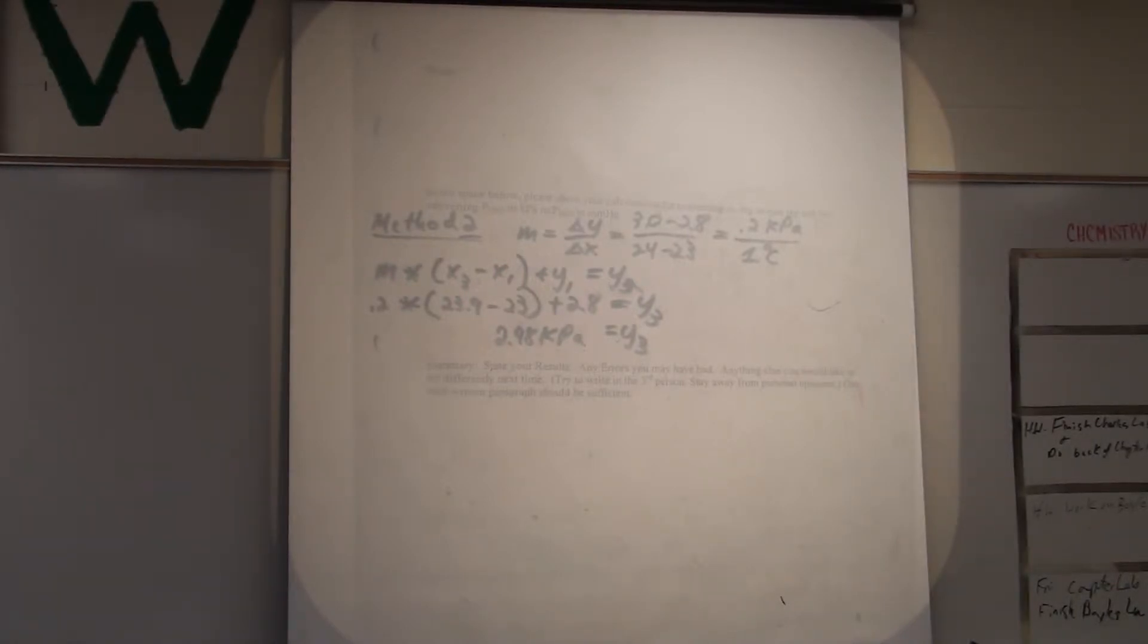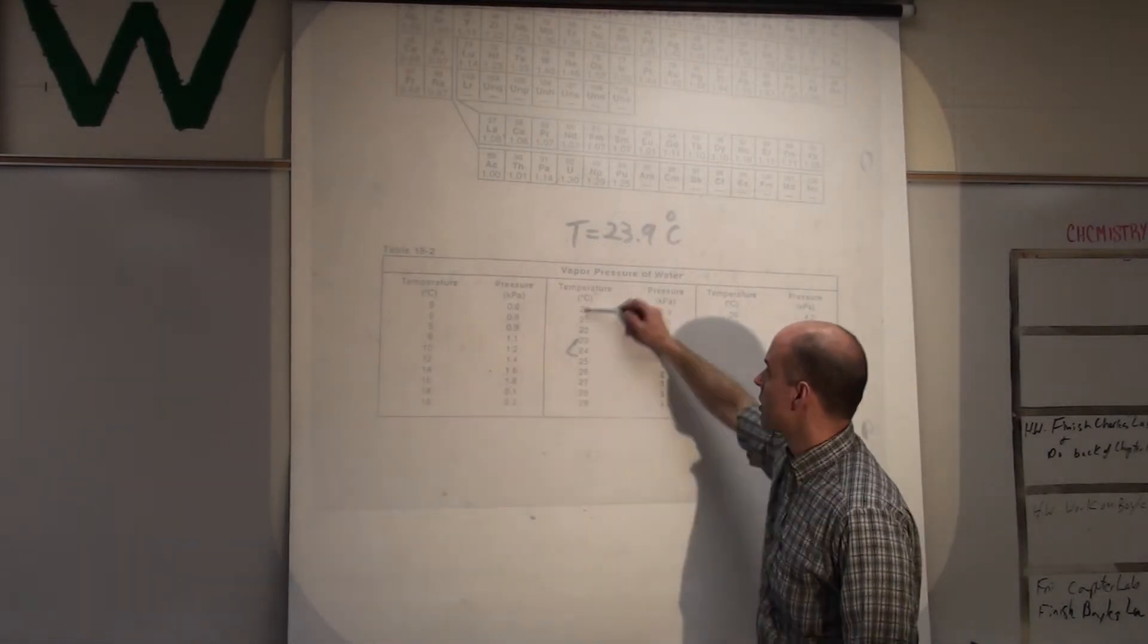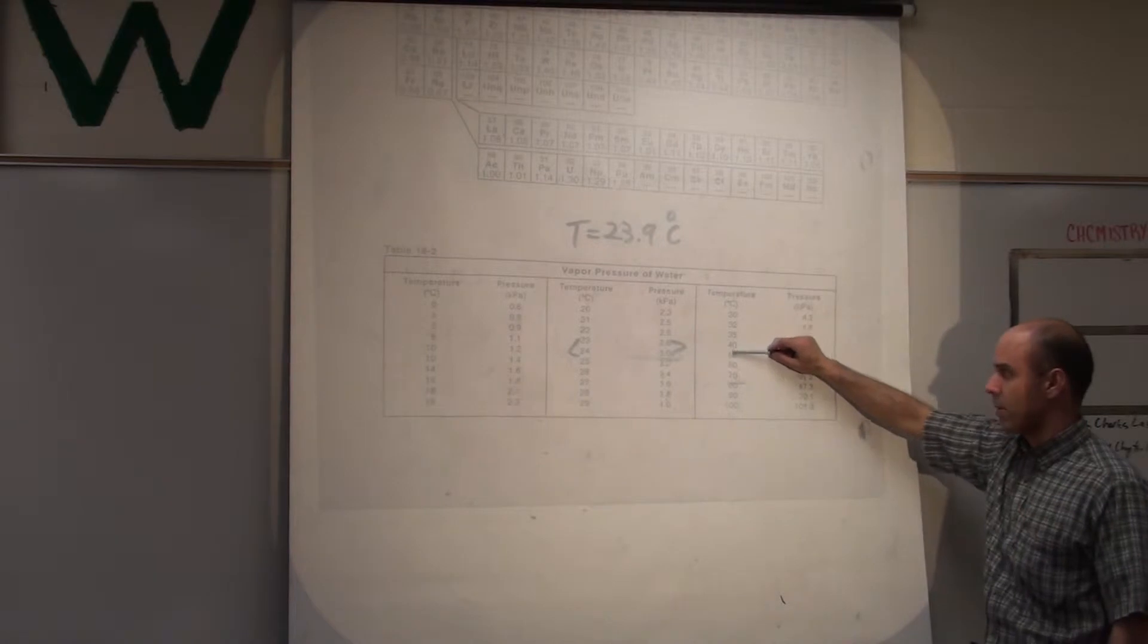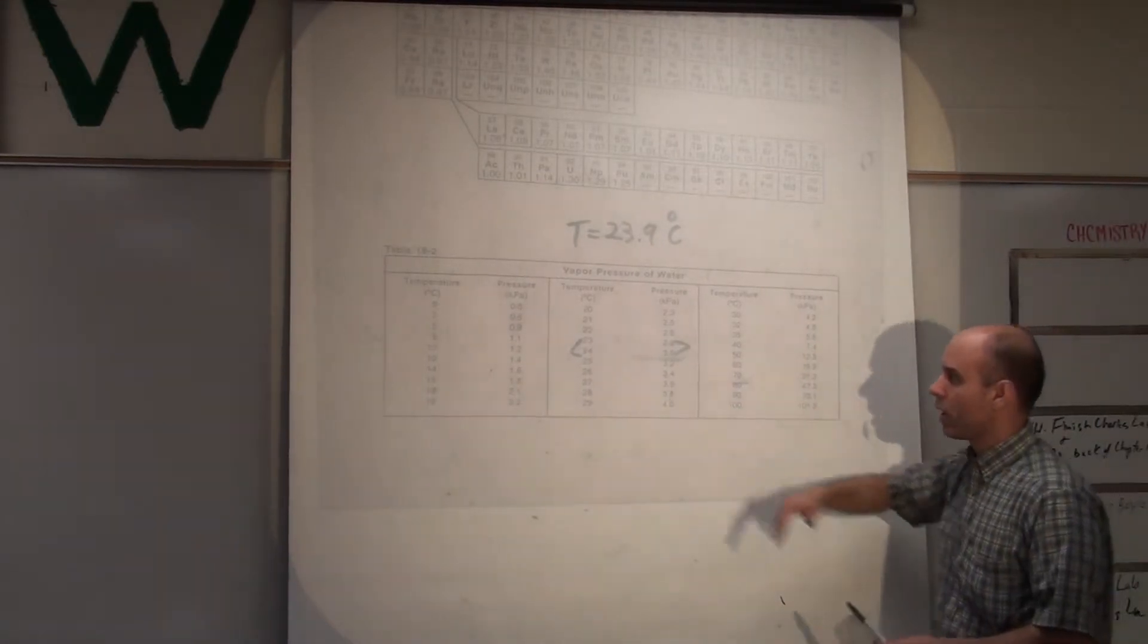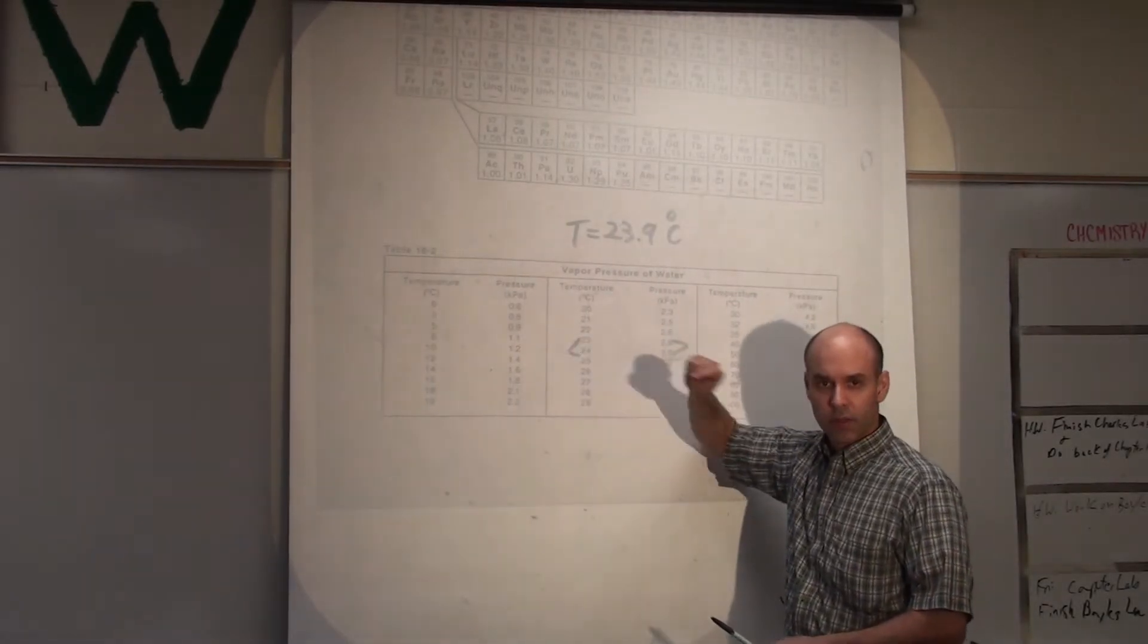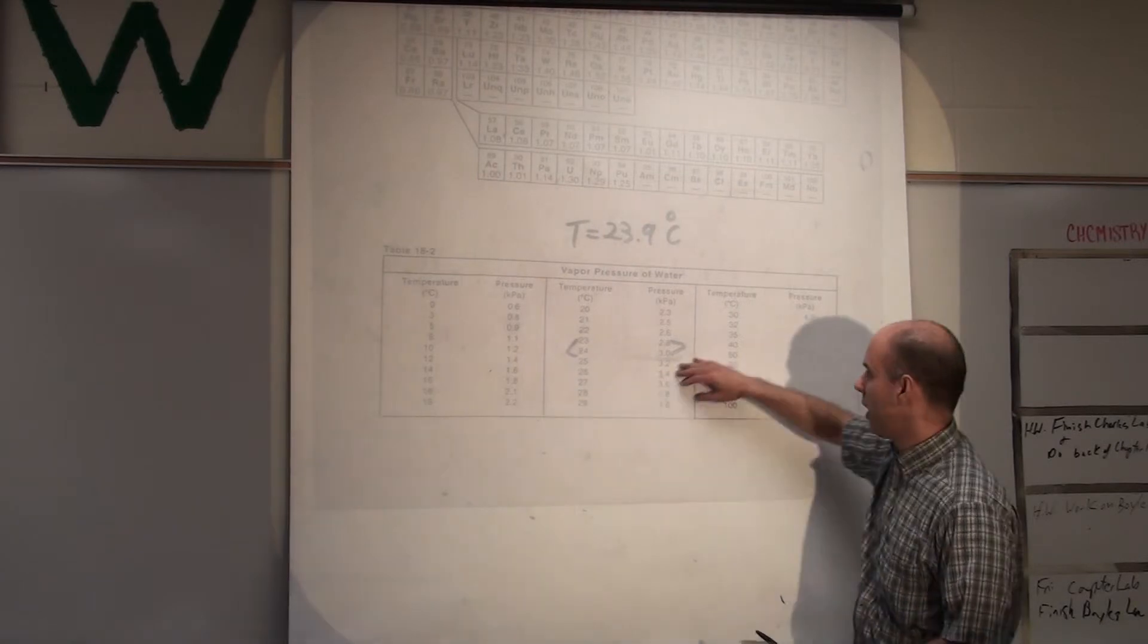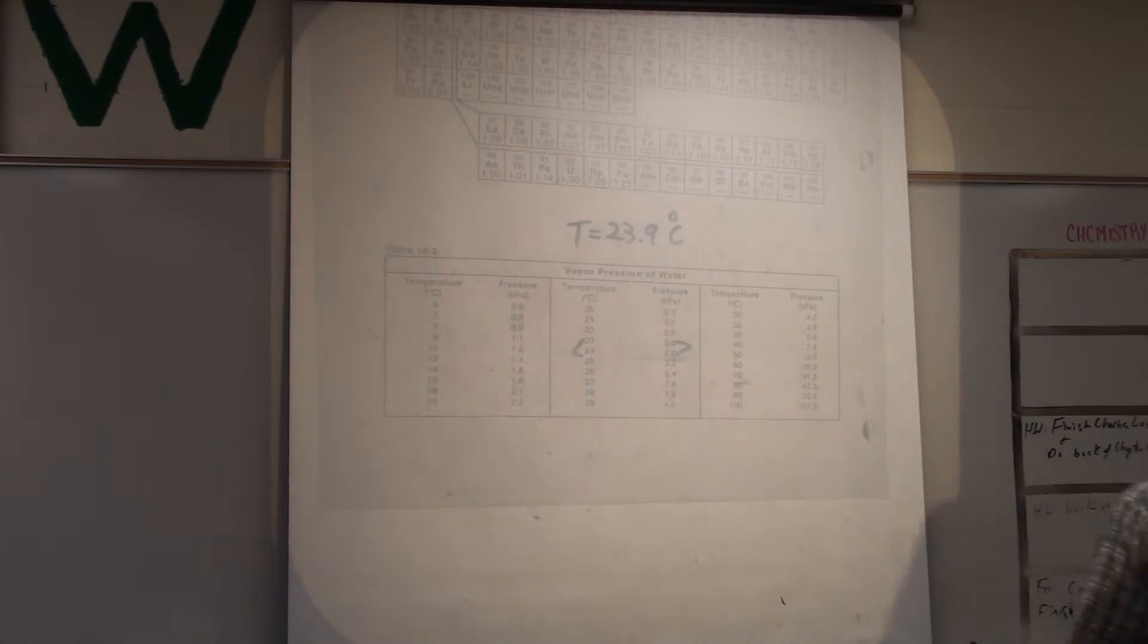No, it all depends on, like so with this table, this table goes up by like twos or in some instances ones. But then up here it starts to skip. So it just all depends on the table you're interpolating. If you're going up by ones, then your value, yes, is going to be very close to the y1. But up here you're going to see bigger changes. And, you know, close is qualitative. It's hard to say, what do you mean by close?